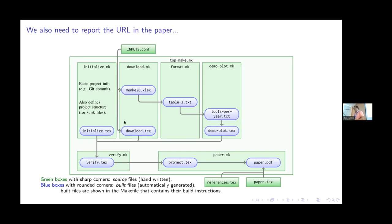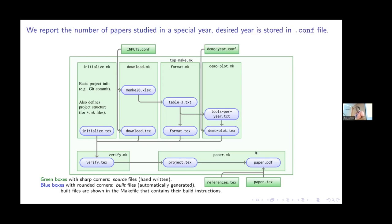If those authors change the file, running the Manage paper will stop and tell you: 'Be careful, the inputs changed.' download.mk also has a download.tex that comes into the paper so you can report the URL. format.mk reports the number of rows in the input table — like 'they studied 500,000 papers' — written automatically into format.tex. If you change a configuration year from, say, 1996 to 2003, Make recognizes the change and only reruns the affected step — recreating demoplot.tex — and stamps the updated number into the PDF. You can then peacefully focus on your science.